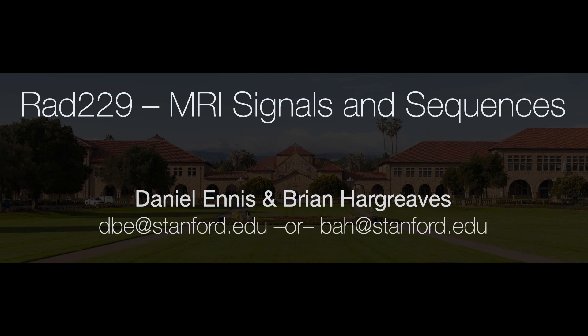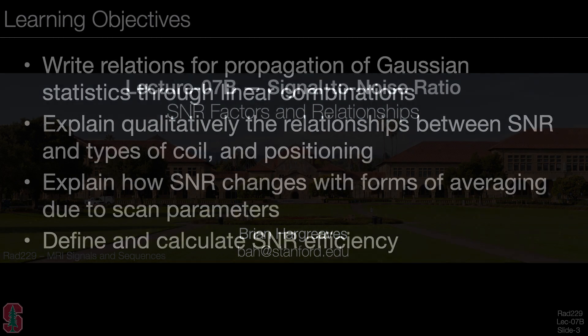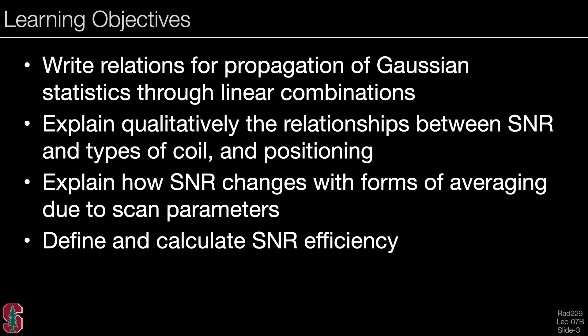This lecture is part of a series for RAD 229 MRI Signals and Sequences offered in the Department of Radiology at Stanford University. The seventh lecture on signal-to-noise ratio is divided into three parts. Lecture 7b covers SNR factors and relationships. The learning objectives are to write relations for propagation of Gaussian statistics through linear combinations, explain qualitatively the relationships between SNR and types of coil and positioning, explain how SNR changes with forms of averaging due to scan parameters, and to define and calculate signal-to-noise ratio efficiency.